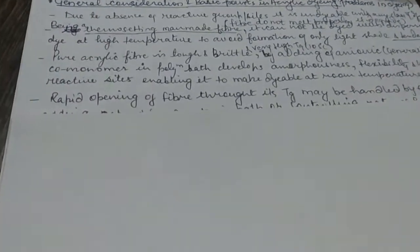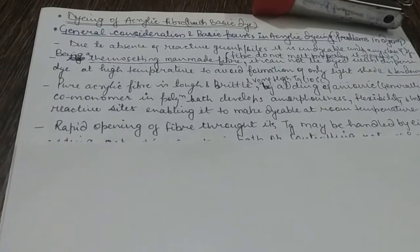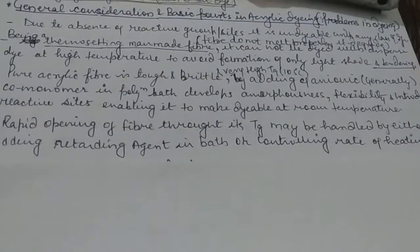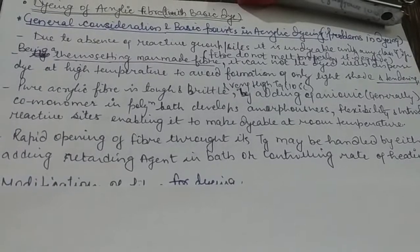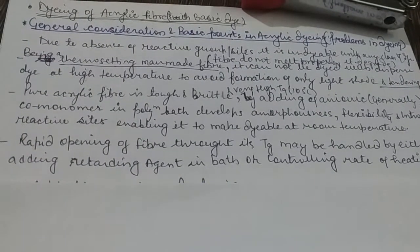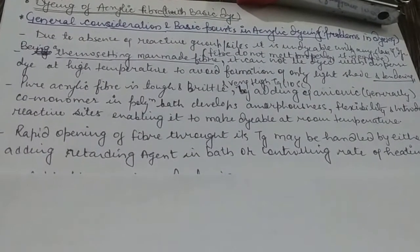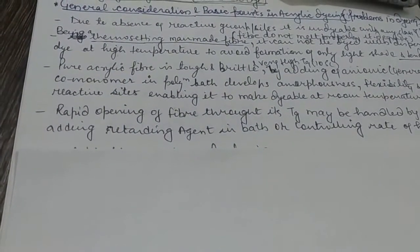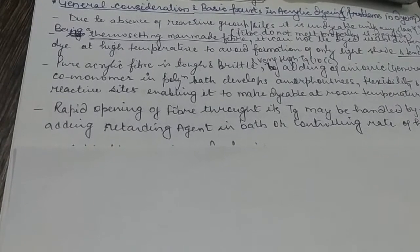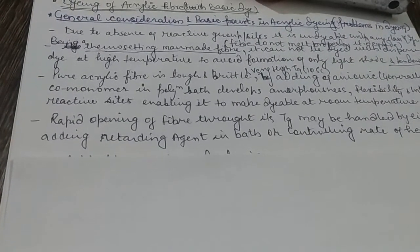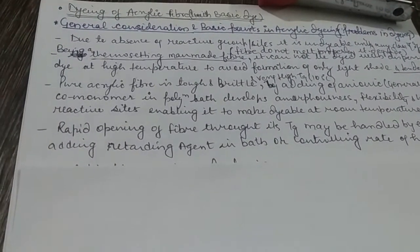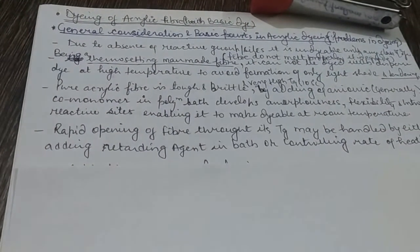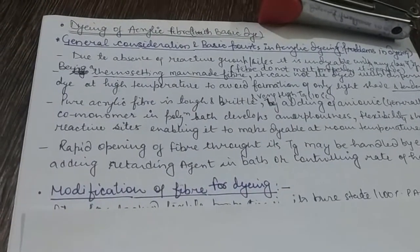Rapid opening of the fiber around its glass transition temperature may be handled by either a retarding agent in the bath or by controlling the rate of heating. When acrylic fiber comes in contact with heat near its glass transition temperature, its opening is very rapid, and this can be controlled by the rate of heating or by adding retarding agents.